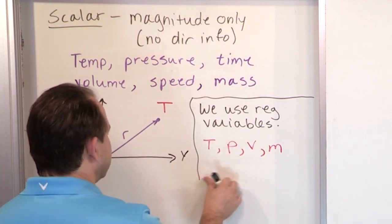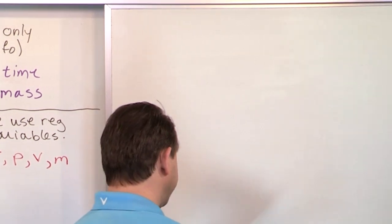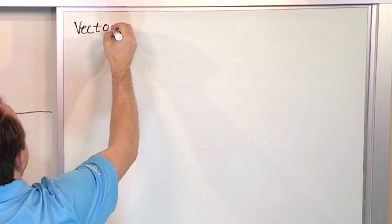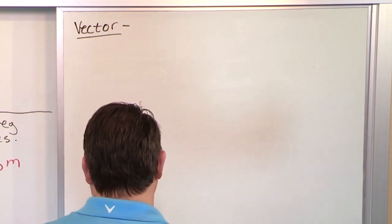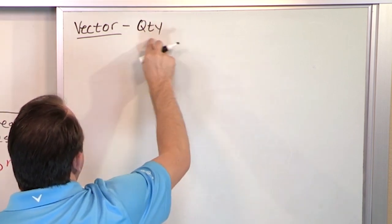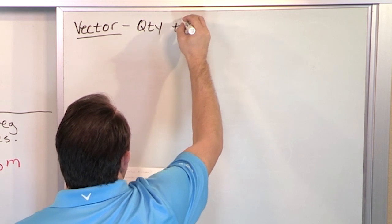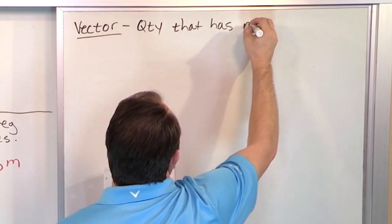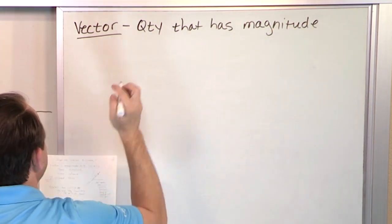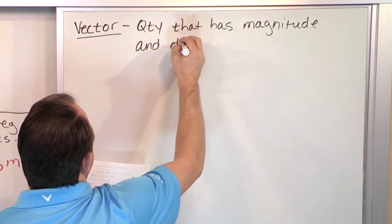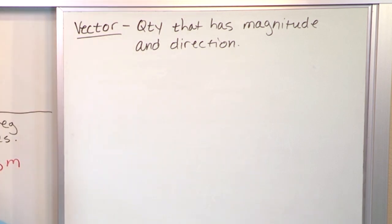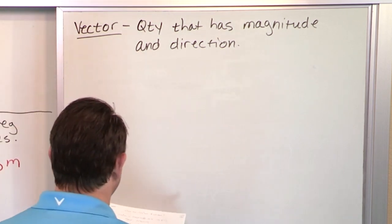Now let's talk about the concept of what a vector is. I've mentioned it several times in passing because they're so important, but now we're finally getting to the actual definition. A vector is a quantity that has magnitude, just like the scalar does, but it also has direction.